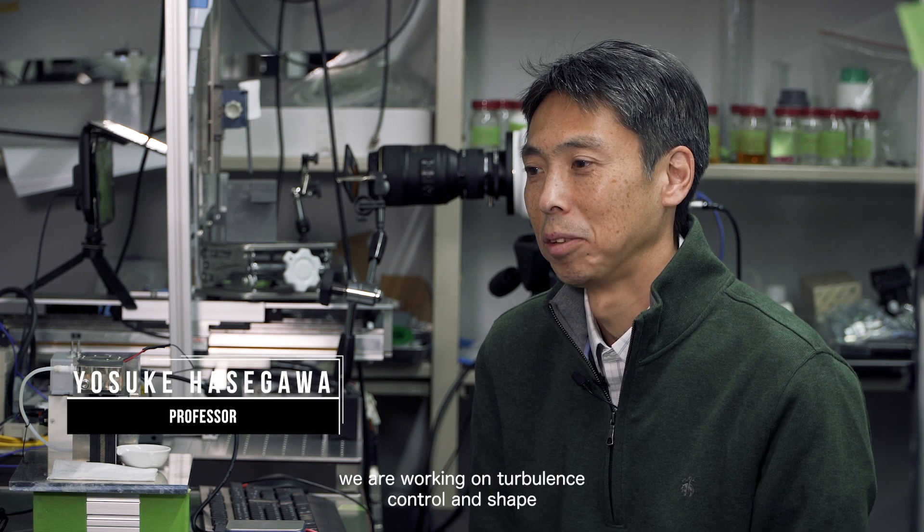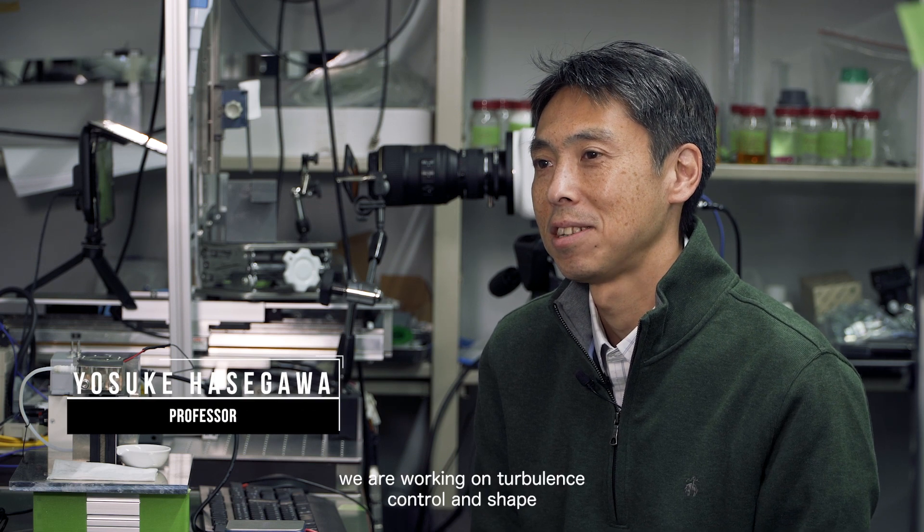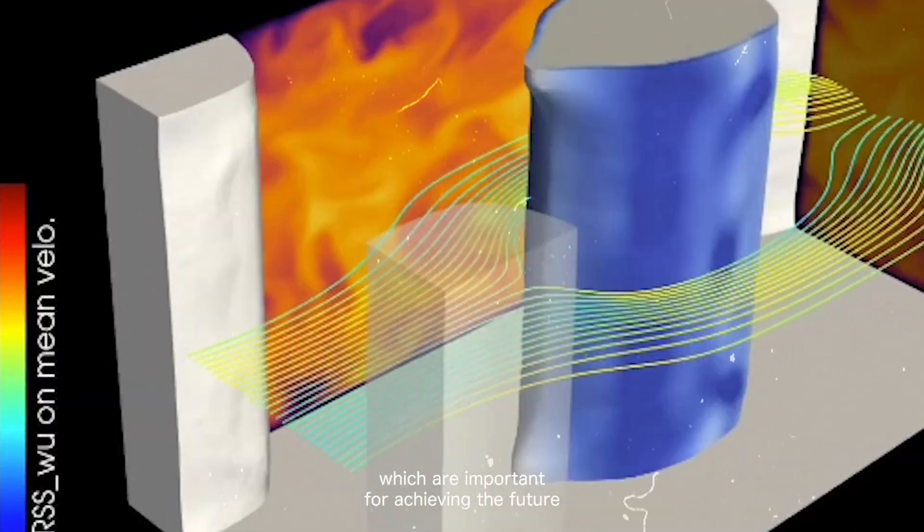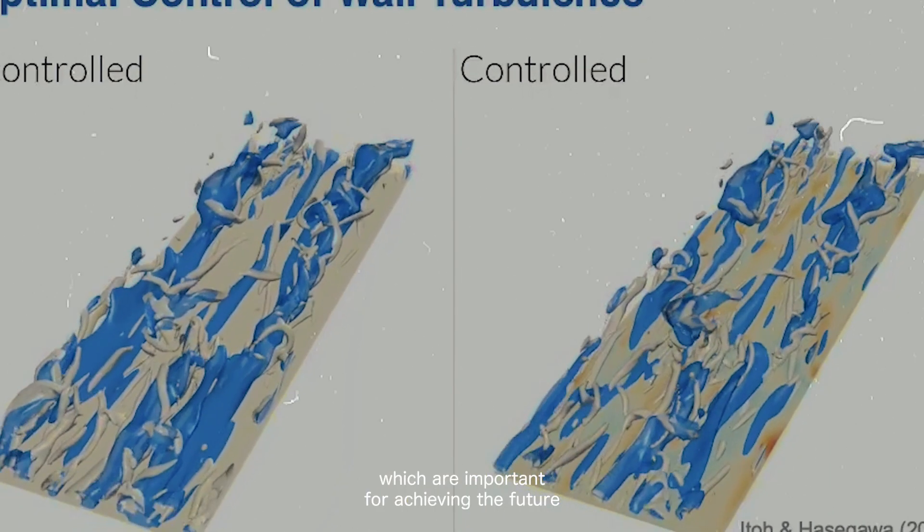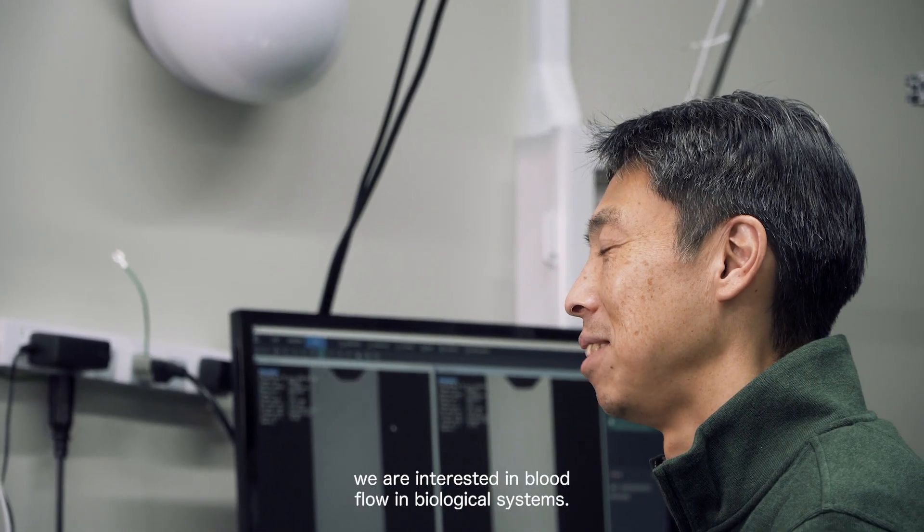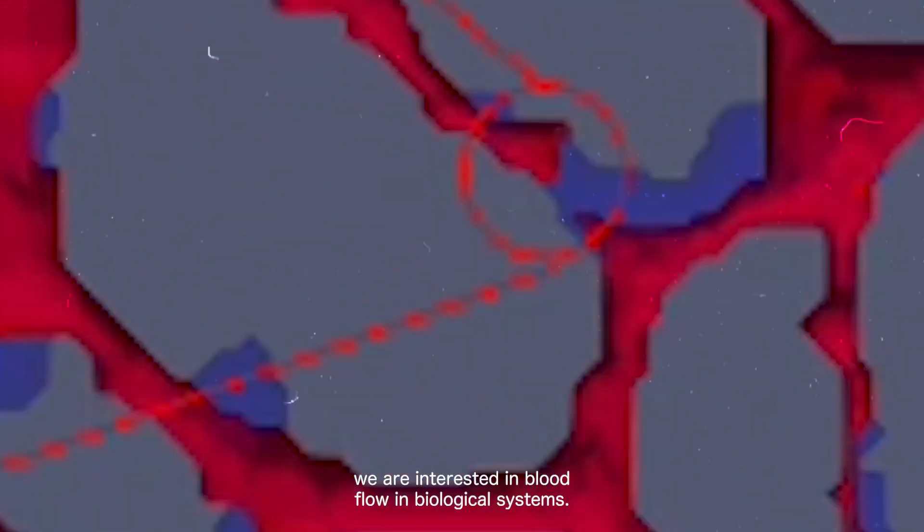For energy applications, we are working on turbulence control and shape and topology optimization of heat transfer surfaces, which are important for achieving a future carbon-free society. For biological applications, we are interested in blood flow in biological systems.